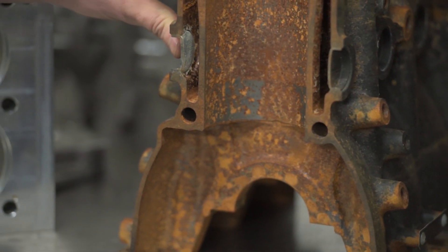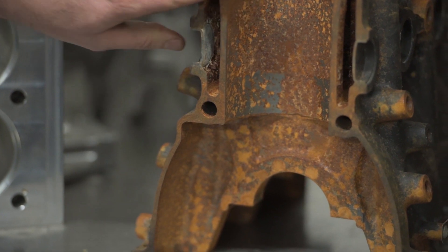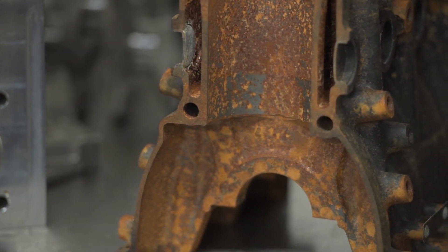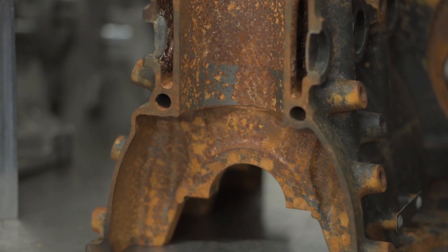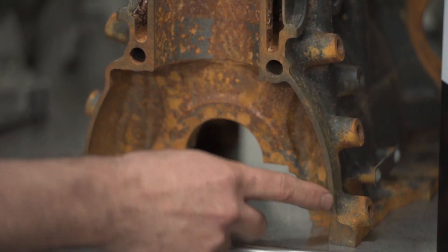So when we have a look at this sectioned 2JZ block, probably the first thing that you'll notice that will be quite surprising to most people is how thin these sections are through here.